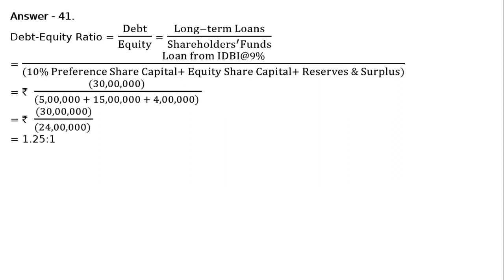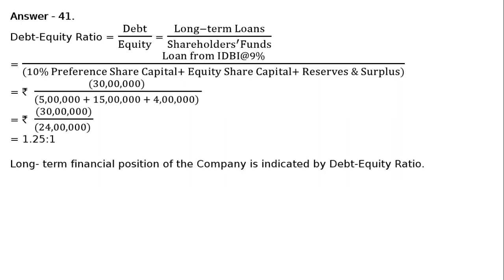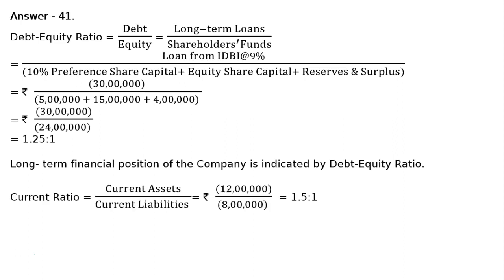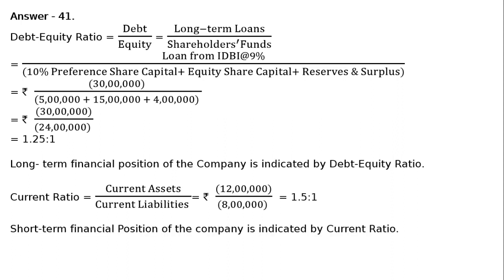This is regarding long-term financial position or solvency. For short-term financial position or short-term solvency, we have to find out the current ratio. Long-term financial position of the company is indicated by the debt-equity ratio. Current ratio is equal to current assets upon current liabilities. Their values are given directly, that is Rs. 12 lakhs upon Rs. 8 lakhs, that is 1.5 is to 1. Short-term financial position of the company is indicated by the current ratio.